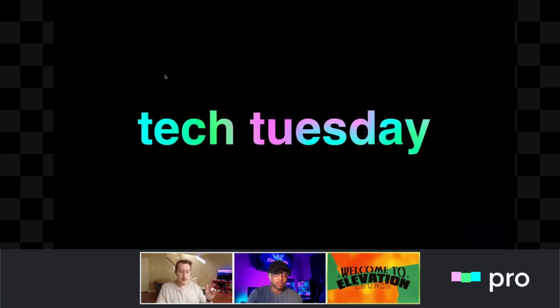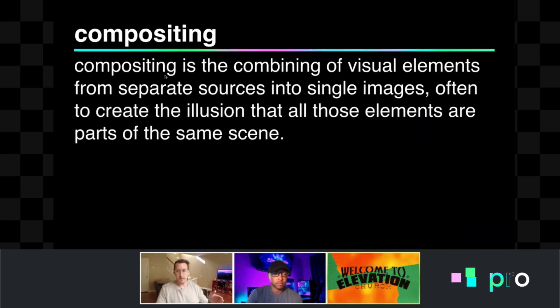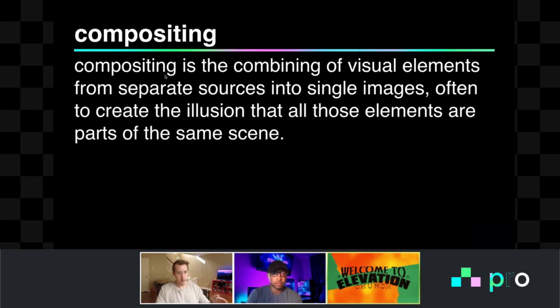Here's the concept we're talking about. We're going to talk about this idea of compositing. Compositing is the combining of visual elements from separate sources into single images, often to create the illusion that all those elements are parts of the same scene.